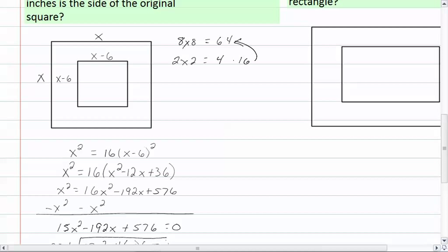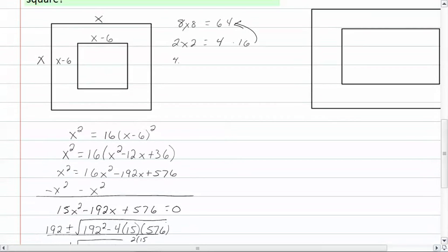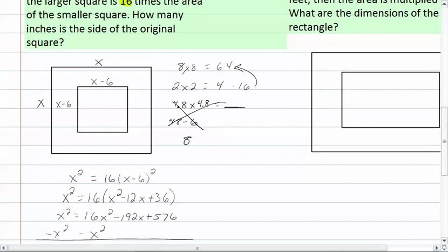If we'd use our four point eight, that means we'd have four point eight times four point eight. But four point eight minus six gives us a negative number, so that part doesn't work. So that means that our dimensions of our original square are eight inches by eight inches.